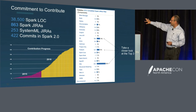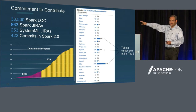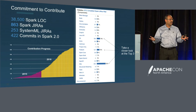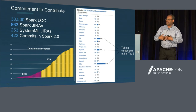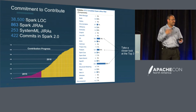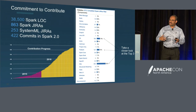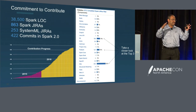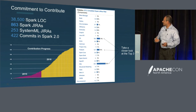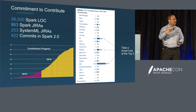If you look at the top three contribution areas, you'll see Spark SQL itself, then PySpark — Python being one of the most popular languages for machine learning, and bringing the Python and Spark environments together with PySpark is a large area of contribution — and the ML libraries themselves. These are the top three of our contributions to the overall Spark ecosystem.